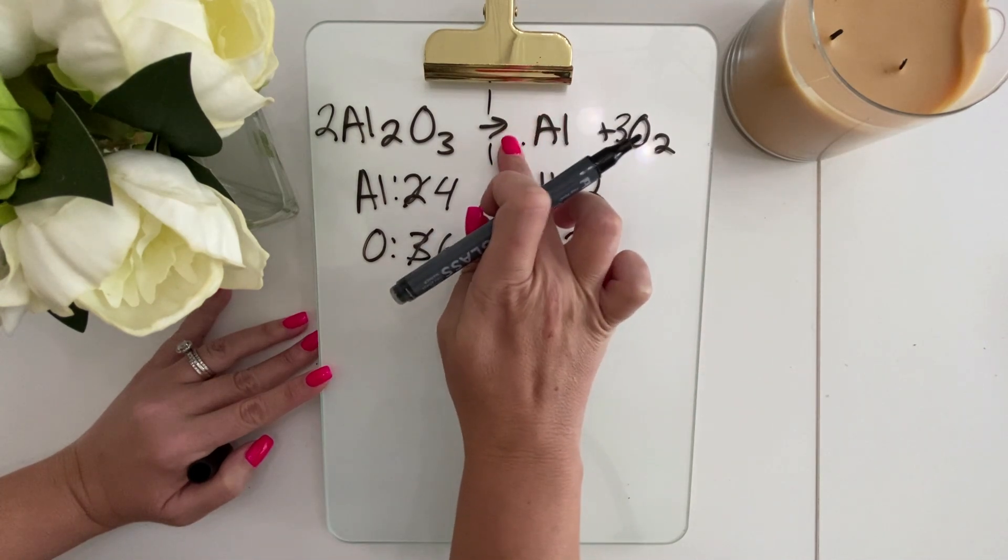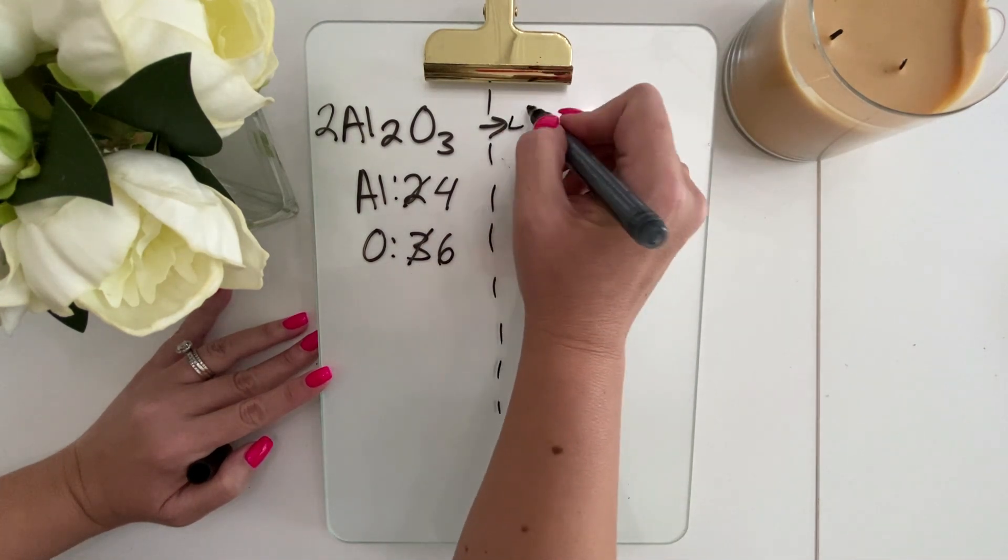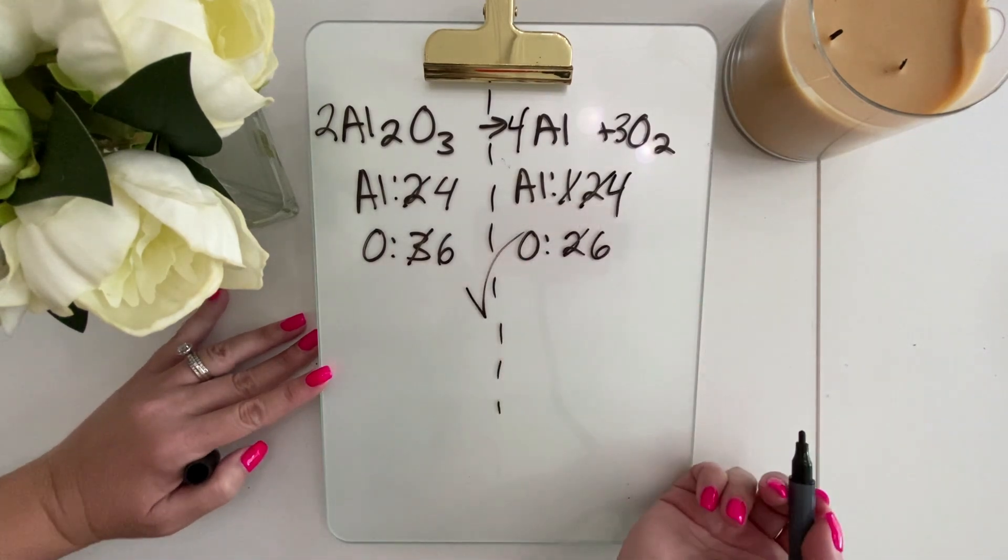So instead of this 2, we can erase it, and we can just put a 4, and then we are balanced.